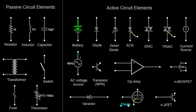A triode is an electronic vacuum tube with three electrodes: a cathode, a control grid, and an anode. It can be used as an amplifier or an electronic switch. Triodes are represented by three lines connected to the cathode, control grid, and anode. An NJFET (N-channel junction field effect transistor) is a type of field effect transistor where the majority charge carriers are electrons, used for amplification and switching applications. NJFETs are represented by a line with an arrow pointing inward on the source side.